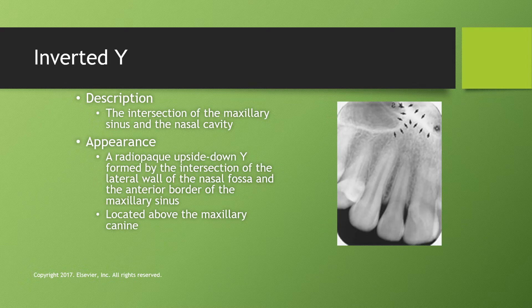The inverted Y is a board favorite. It is the intersection of the maxillary sinus and the nasal cavity — don't confuse it with the maxillary septa. Where the nasal cavity and the maxillary sinus meet, you see this upside-down Y shape. It is always located above the maxillary canine, so you won't see it anywhere else. Odds are you will see this question on your boards.